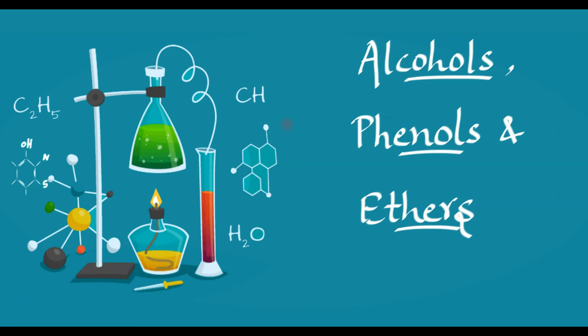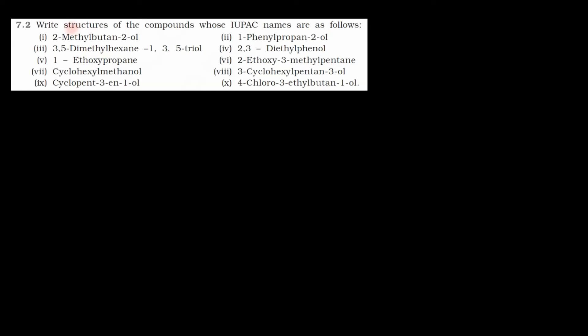Hello everyone. We are solving the back exercise questions of the chapter alcohols, phenols and ethers, and today we will solve question number 2. The question says: write structures of the compounds whose IUPAC names are given. Kuch IUPAC names diye hain compounds ke, aapko unke structures draw karke batane hain. So let's do them one by one.